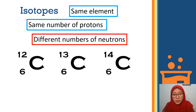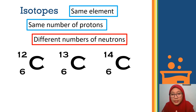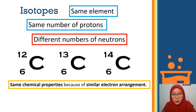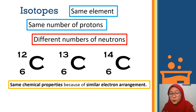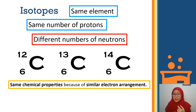For example, we have carbon — carbon-12, carbon-13, and carbon-14. The number of neutrons is different because the nucleon numbers are different, showing that the neutron number is also different. Isotopes have the same chemical properties because of similar electron arrangement. All three carbon isotopes have a proton number of 6, so the number of electrons is also 6, giving them the same electron arrangement and therefore the same chemical properties.